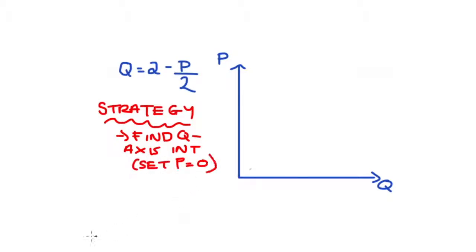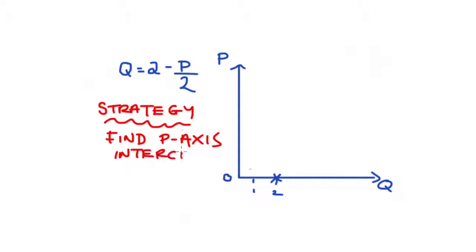So let's start here with the Q axis intercept by setting P = 0, and we find if we do that, we get Q = 2 - 0/2, which is just equal to 2, and that's that point here. Good, so let's do the same thing for our P axis intercept. This point is when the quantity variable is equal to 0.